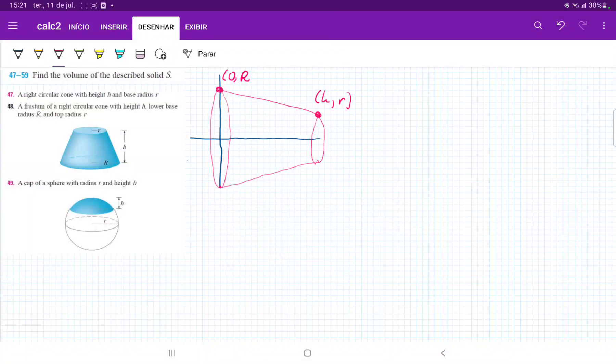For number 48, they want us to find the volume of the frustum of a right circular cone. I've drawn it out on the xy-axis and put the two points here. The first point crosses the y-axis at (0, capital R), which is the height of that bigger radius here. And for the smallest radius, the height is little r.